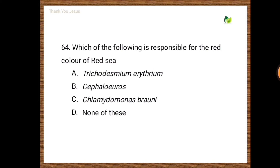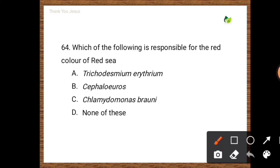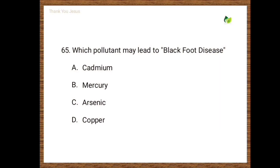Next question: Which of the following is responsible for the red color of the Red Sea? Options are Trichodesmium erythraeum, Cephaleuros, Chlamydomonas nivalis, none of these. Correct answer is Trichodesmium erythraeum. Next question: Which pollutant may lead to black foot disease? Options are cadmium, mercury, arsenic, copper. The correct option is the third one, that is arsenic.